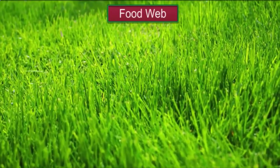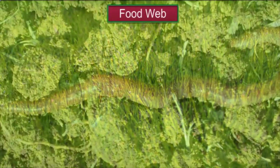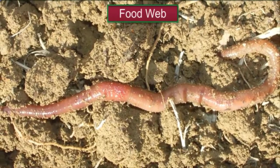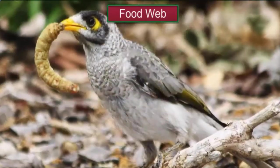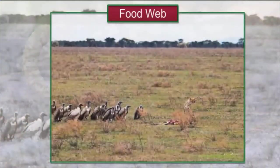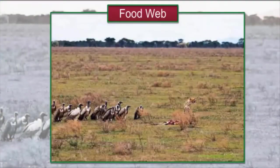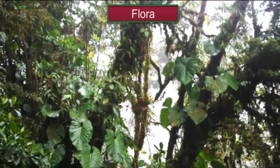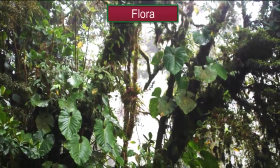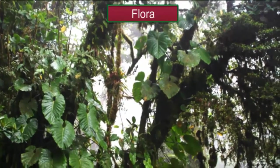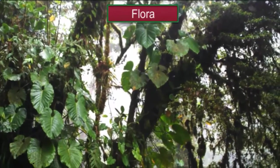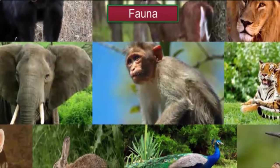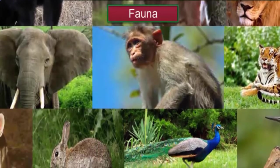We do not live in isolation from the plants and animals around us. Various species that form the biodiversity of a region are interdependent on each other. All the species of plants and trees found in a region are collectively called the flora of the region. The species of animals found in a region are collectively called the fauna of the region.